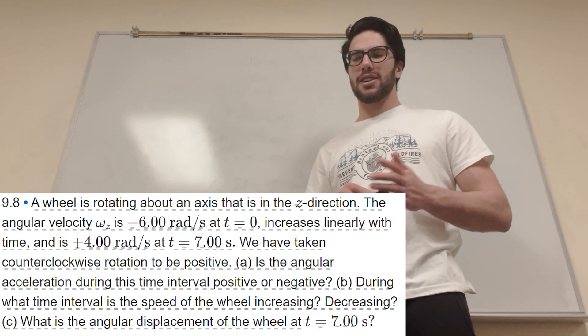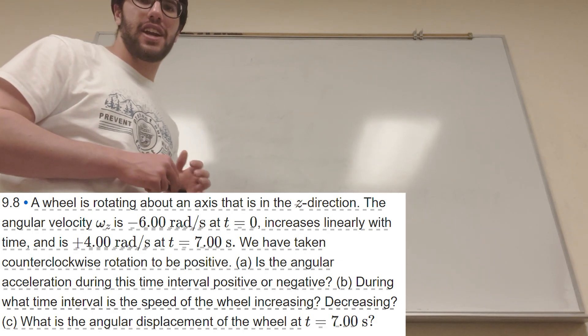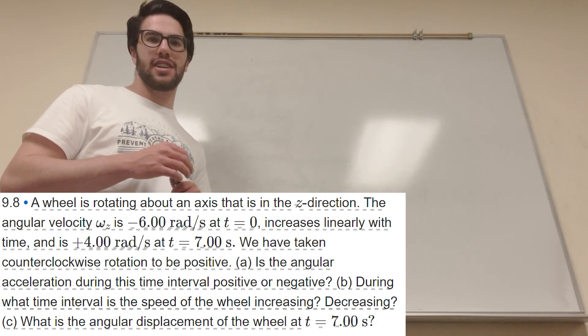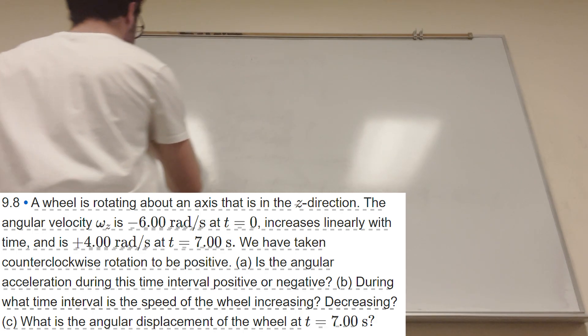What's up, Cal gang? All right, we got some rotational kinematics problems here. So this one is, the wheel is rotating on the axis in the z-direction. Yeah, let's just go ahead and draw a little picture for this.